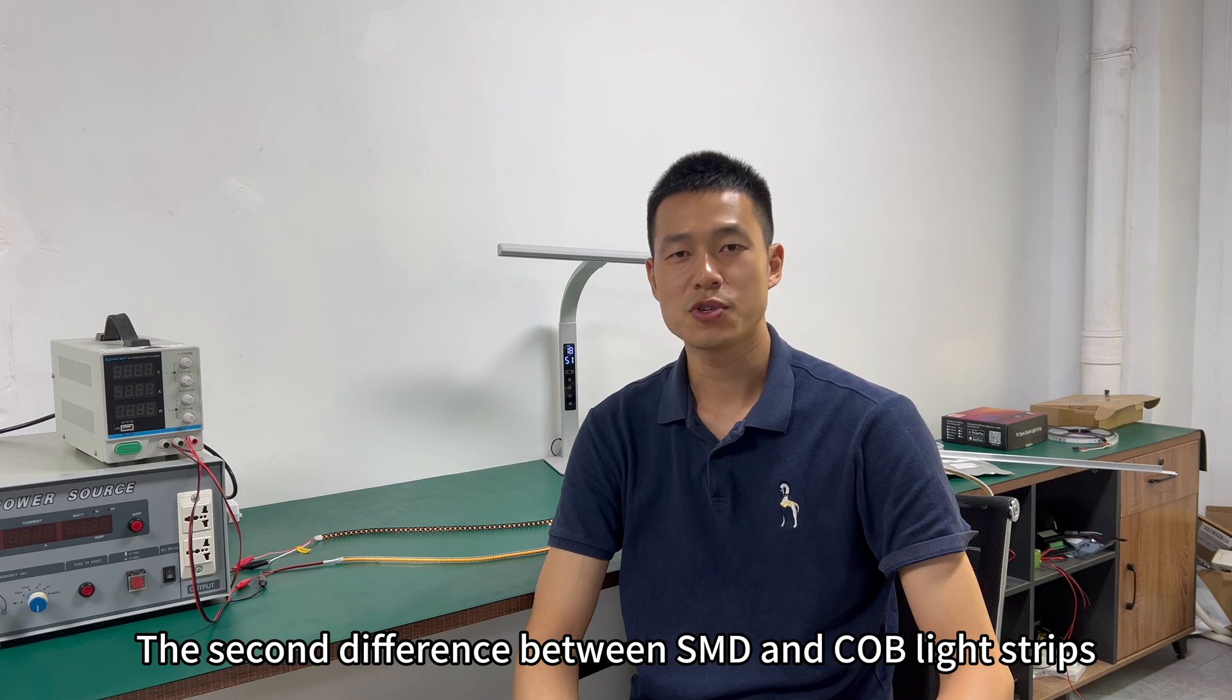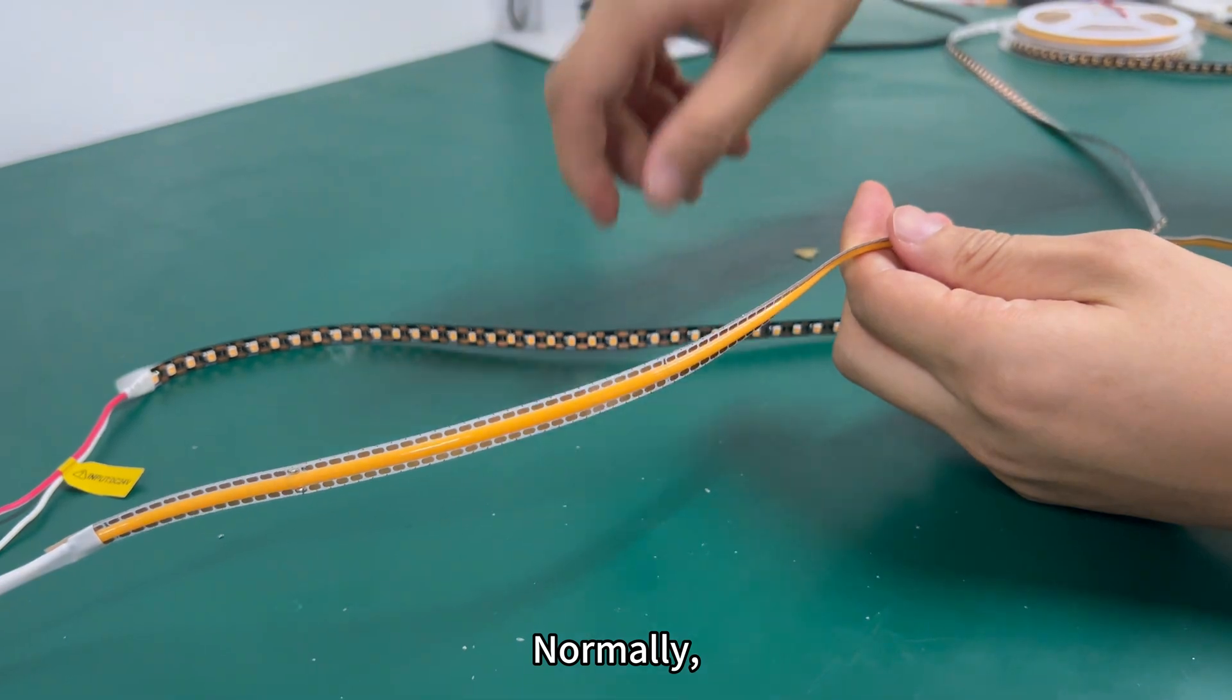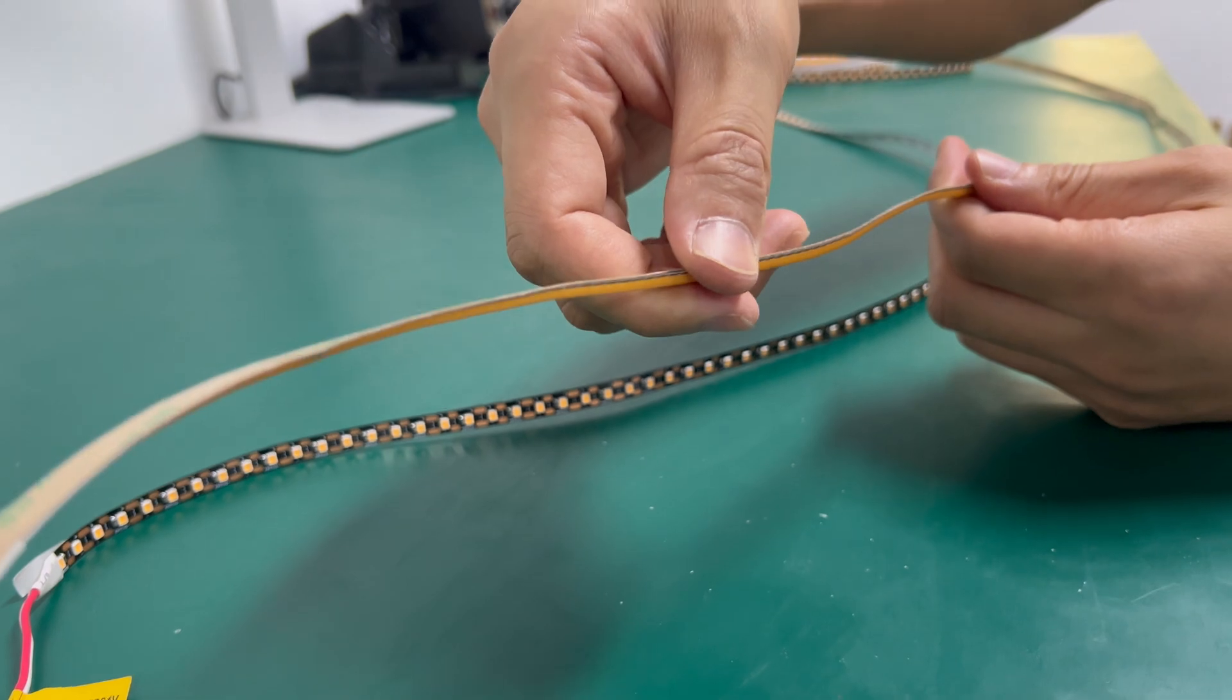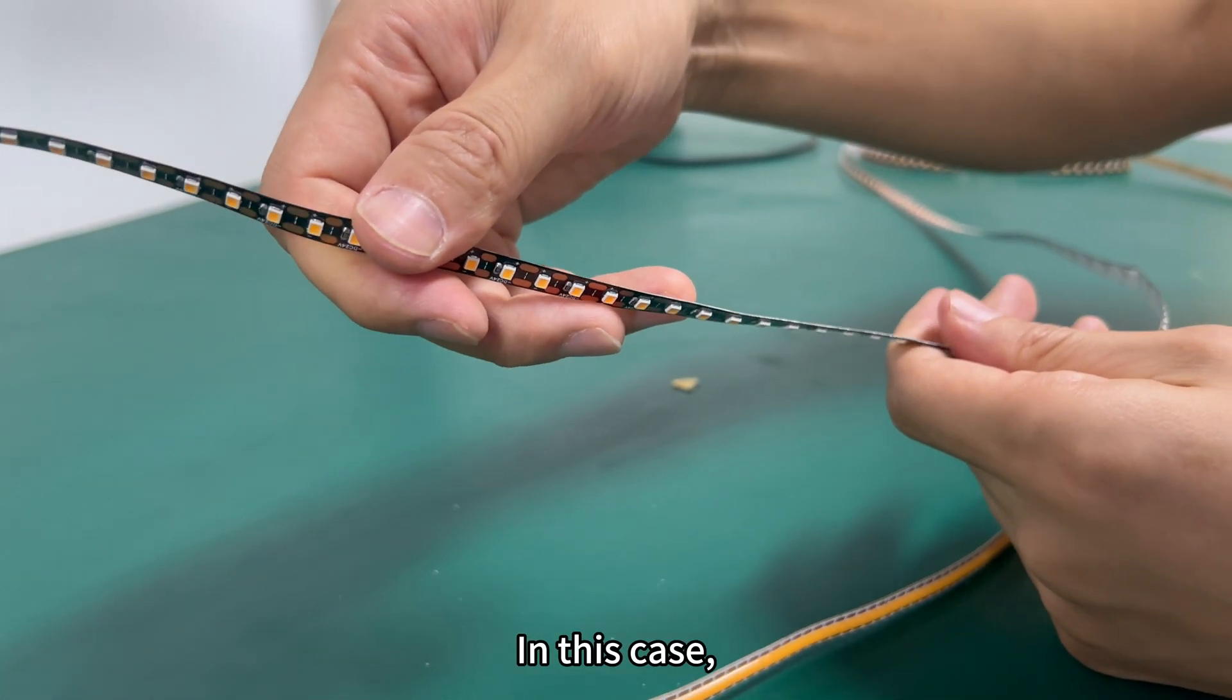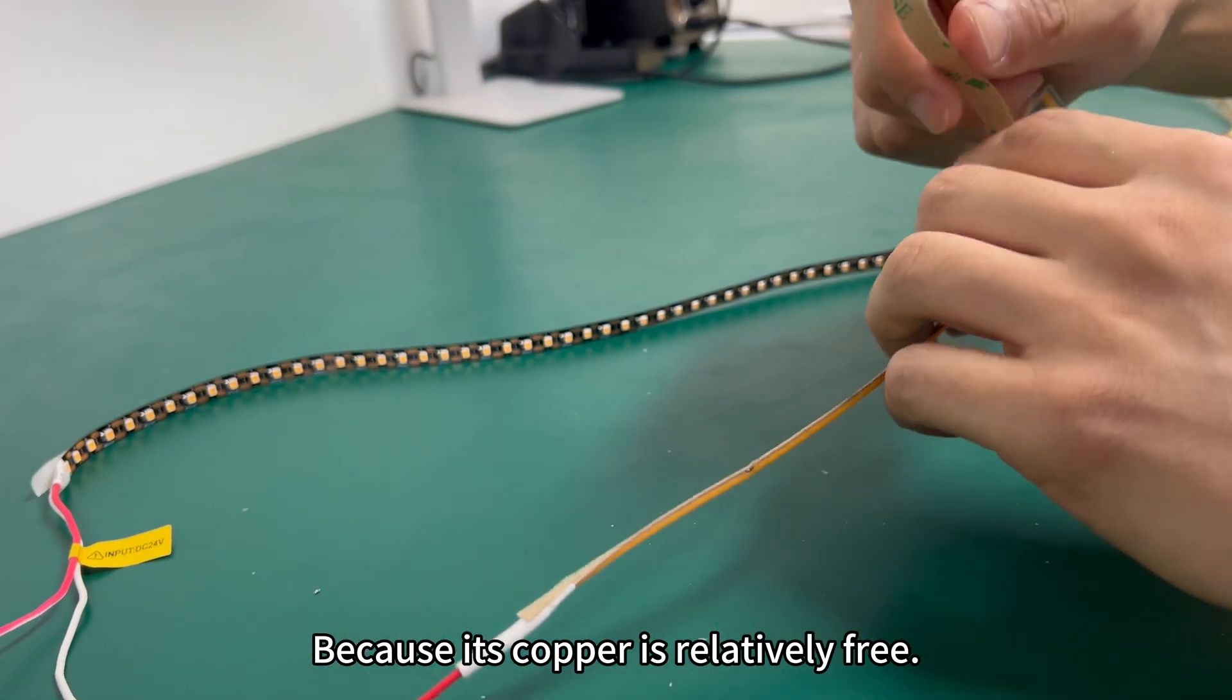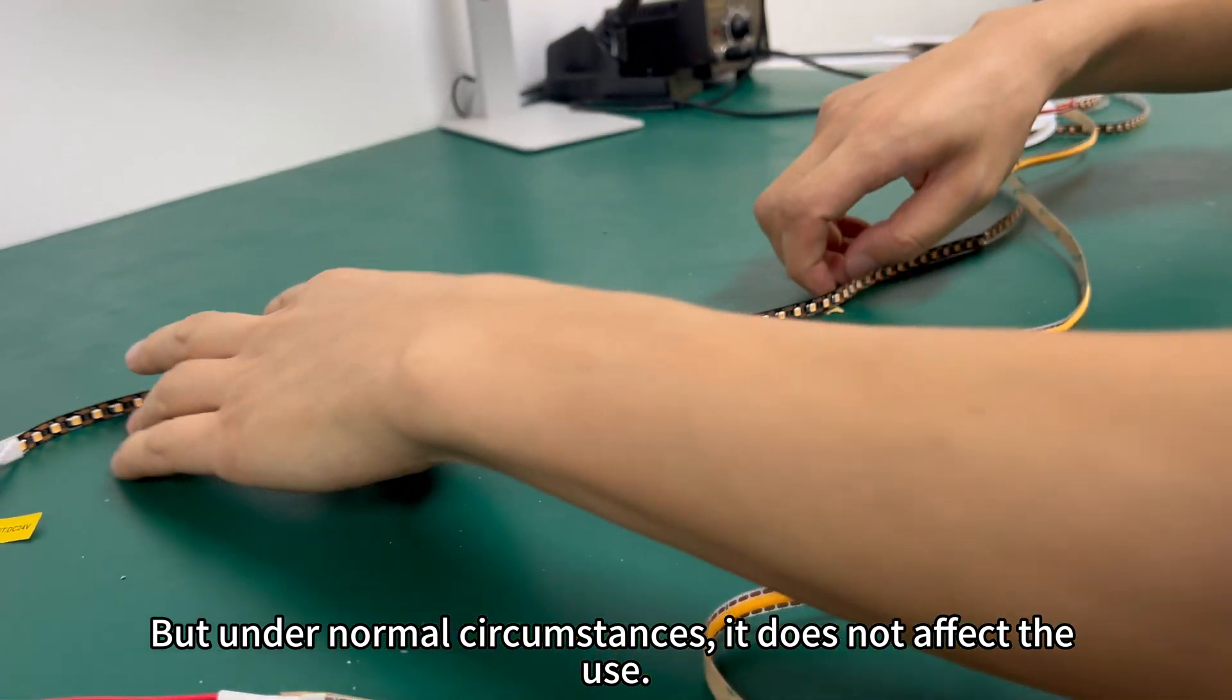The second difference between SMD and COB light strips is the thickness of the lamp board. Normally, the COB light strip is limited by one of its glue sealing process. It will generally be one ounce of copper thickness. SMD light strips can be made thicker. It can be two ounces or three ounces. In this case, when the copper is thicker, its flexibility will be slightly weakened. And COB light strip, because its copper is relatively thin, not as thick as SMD light strips, so its flexibility would be better than SMD, but under normal circumstances, it does not affect the use.